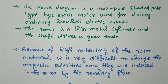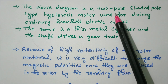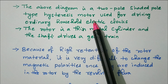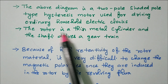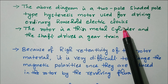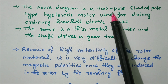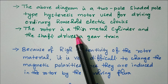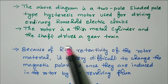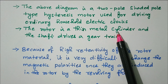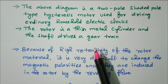In the above diagram, it is a two-pole shaded-pole type hysteresis motor used for driving ordinary household electric clocks. The rotor is a thin metal cylinder and the shaft drives a gear train.